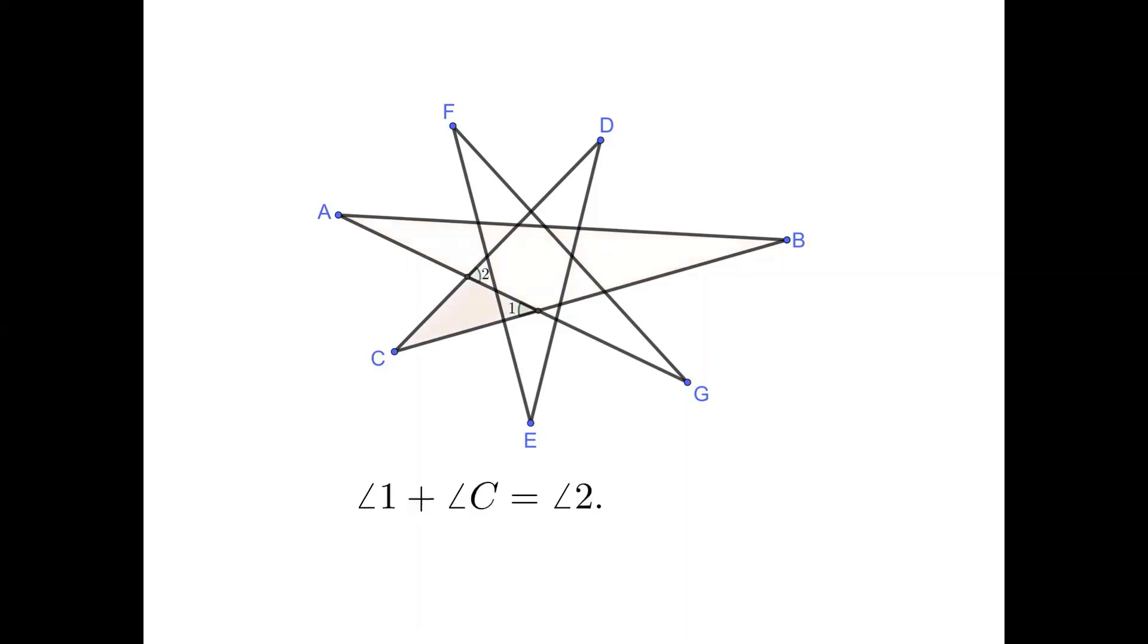Now, consider the triangle containing angles 1 and angle C. Its exterior angle 2 equals the sum of angles 1 and C. As we know, angle 1 equals the sum of angles A and B. Therefore, the size of angle 2 equals the sum of angles A, B, and C by a substitution of angle 1.